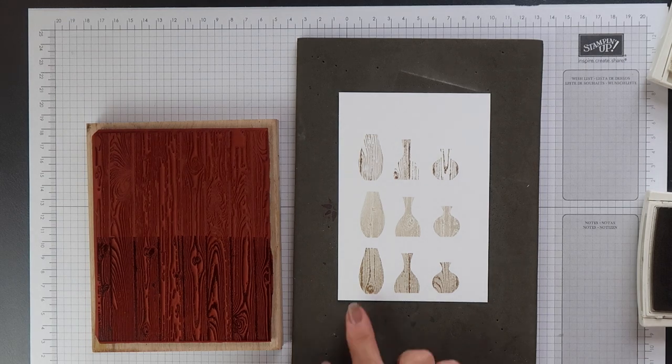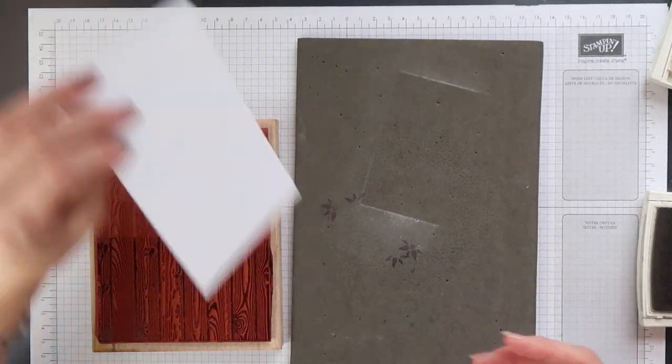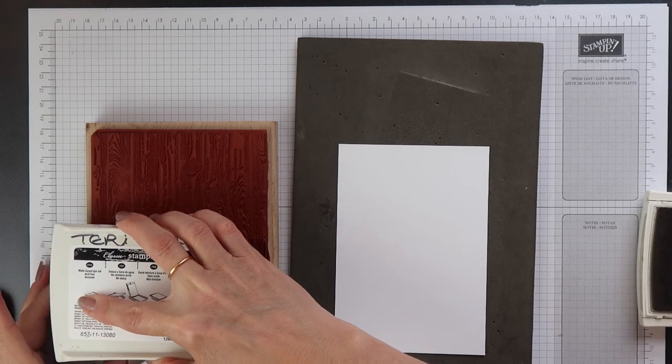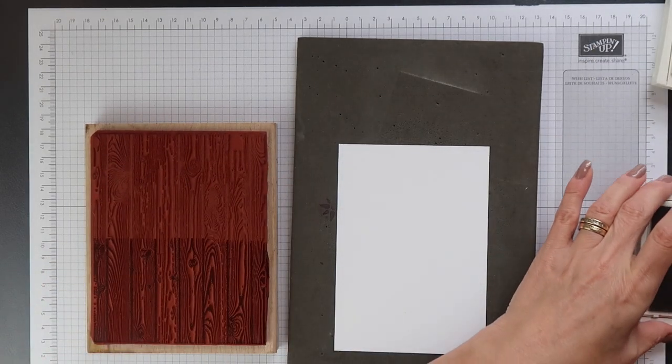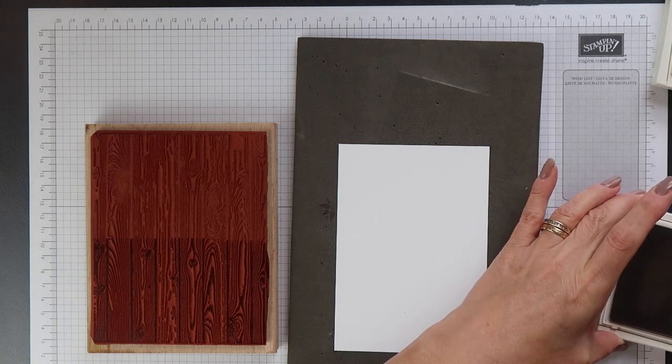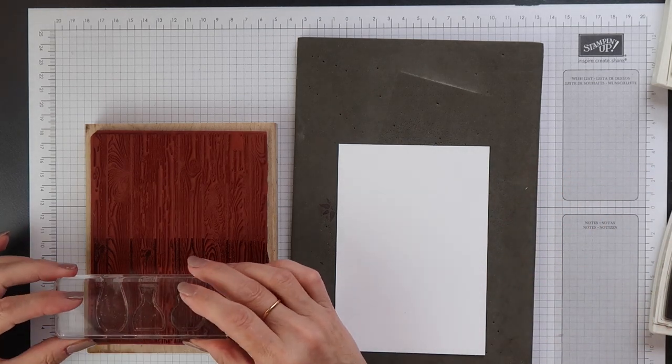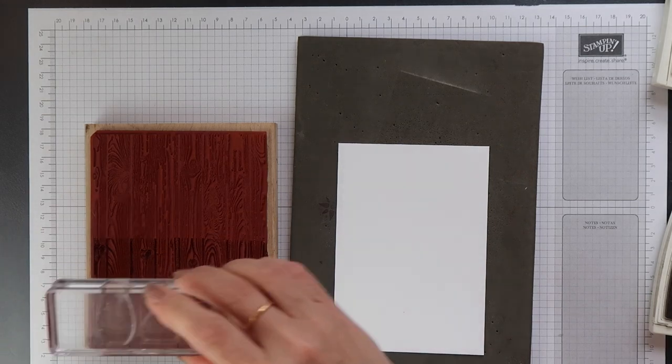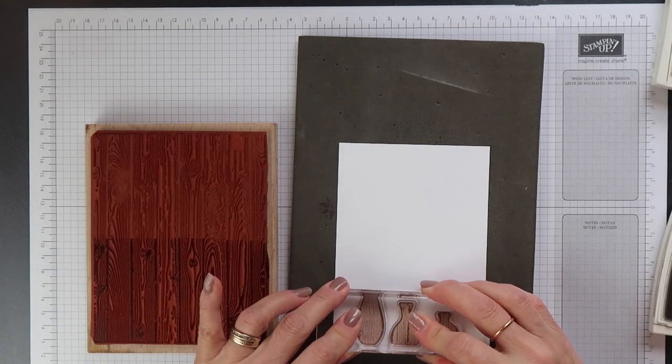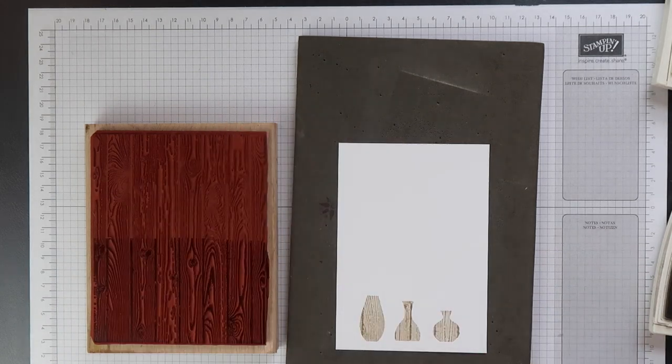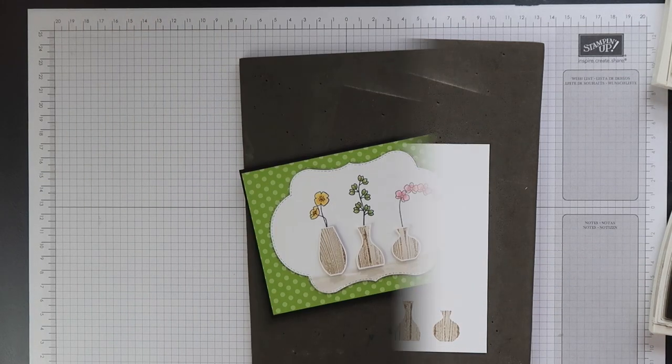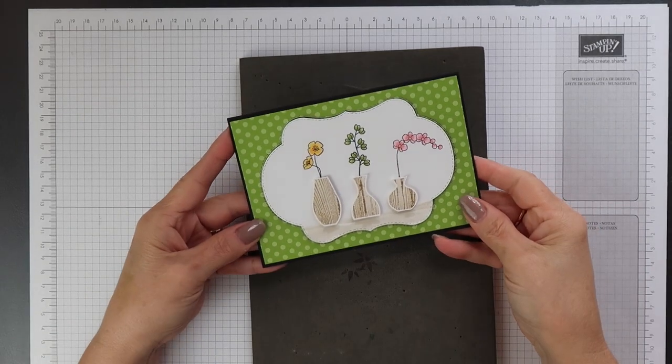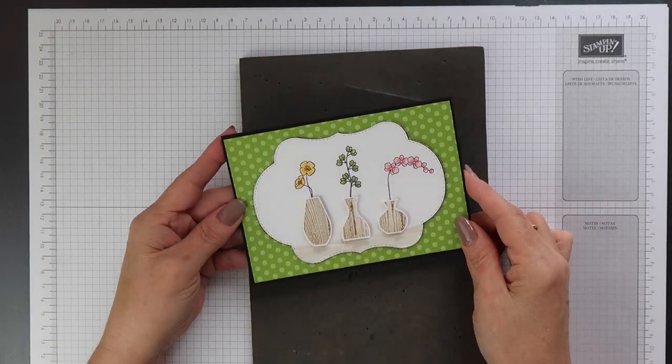Now when I created my card I used the first method. So I'm using normal weight Whisper White cardstock. I'm going to ink up my hardwood again using Soft Suede and then I'm going to ink up the vases using Sahara Sand and I'm going to kiss those two stamps together and then stamp the images. I've used up all my lovely Granny Apple Green paper that I used on my original card. So for today's card I'm going to change the colours slightly.